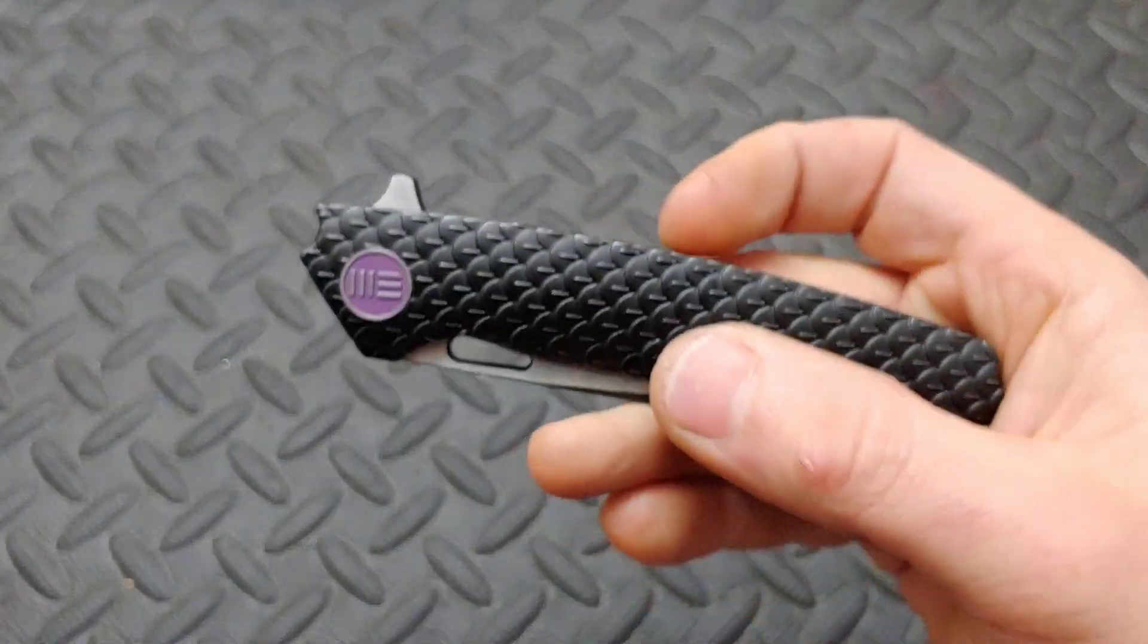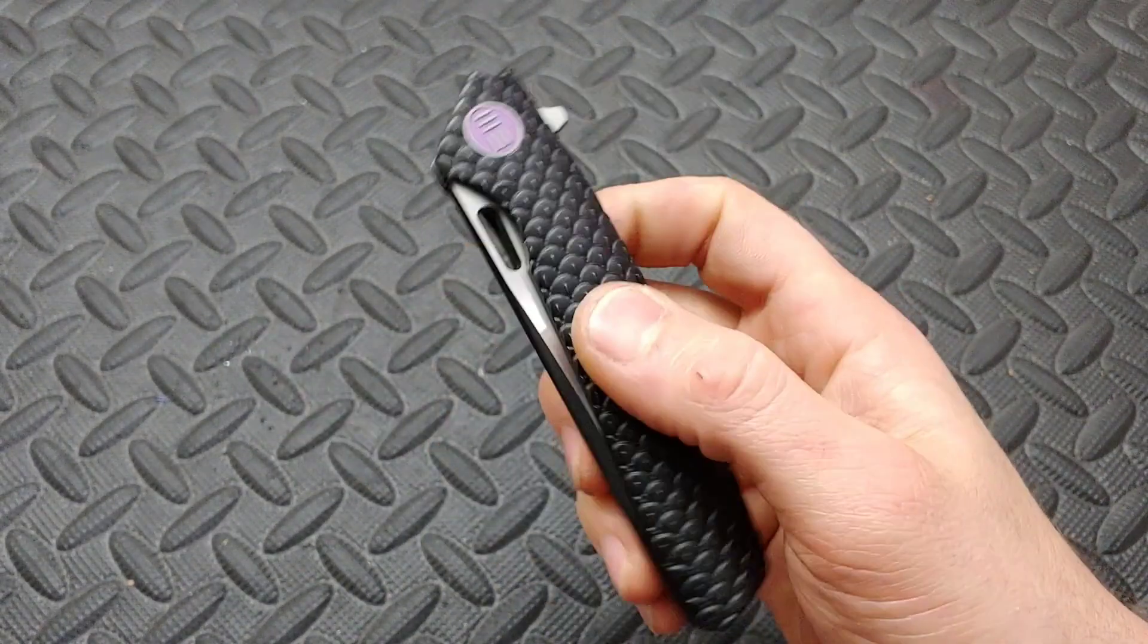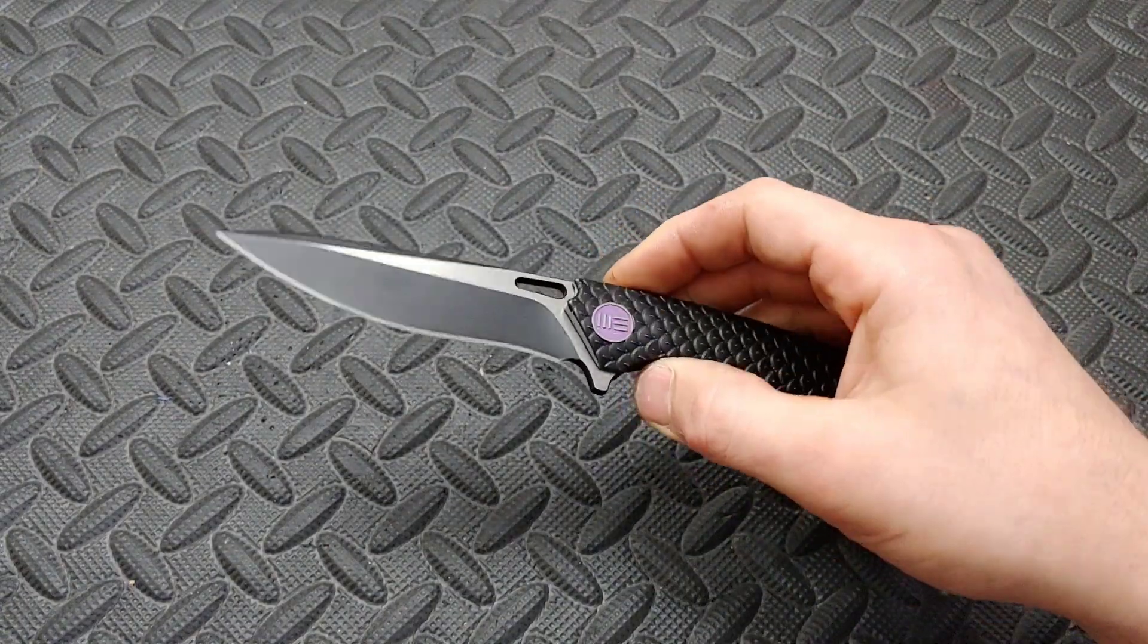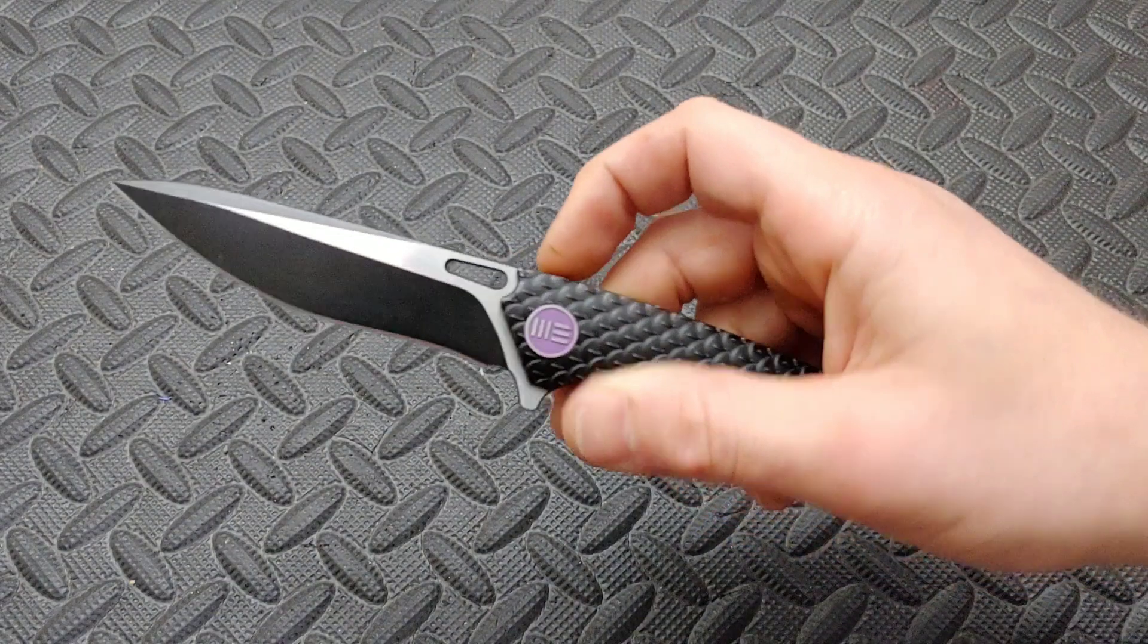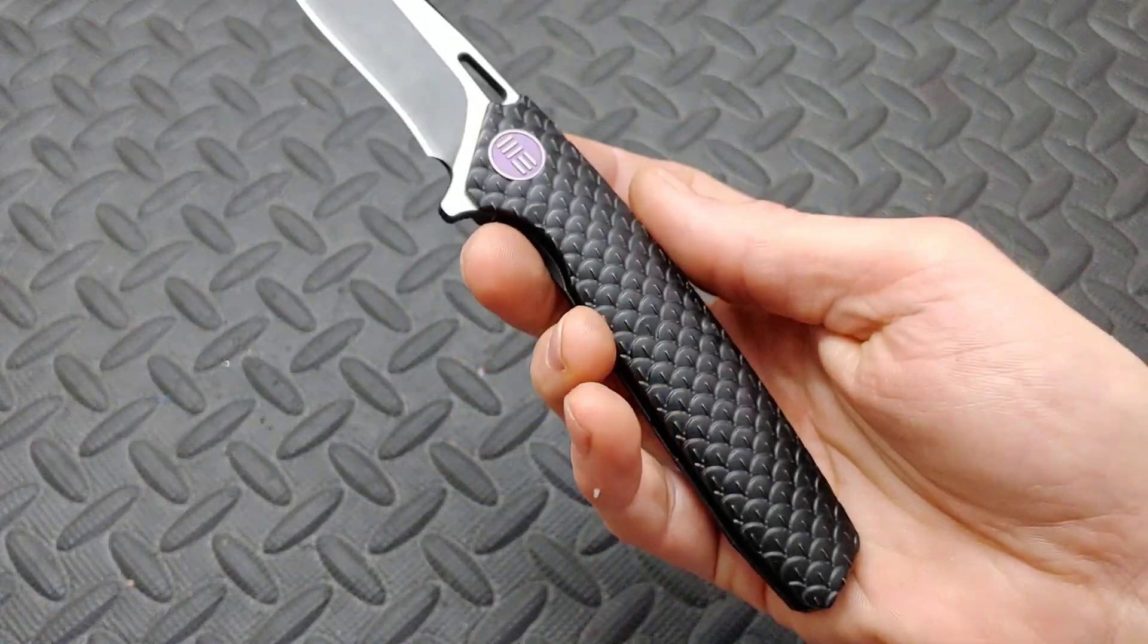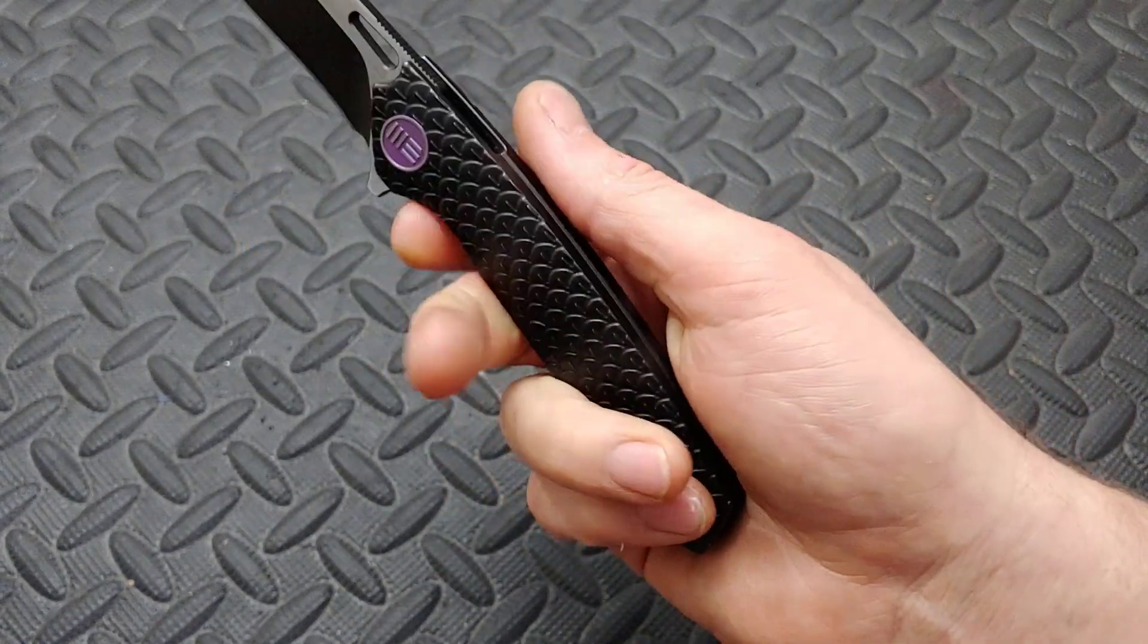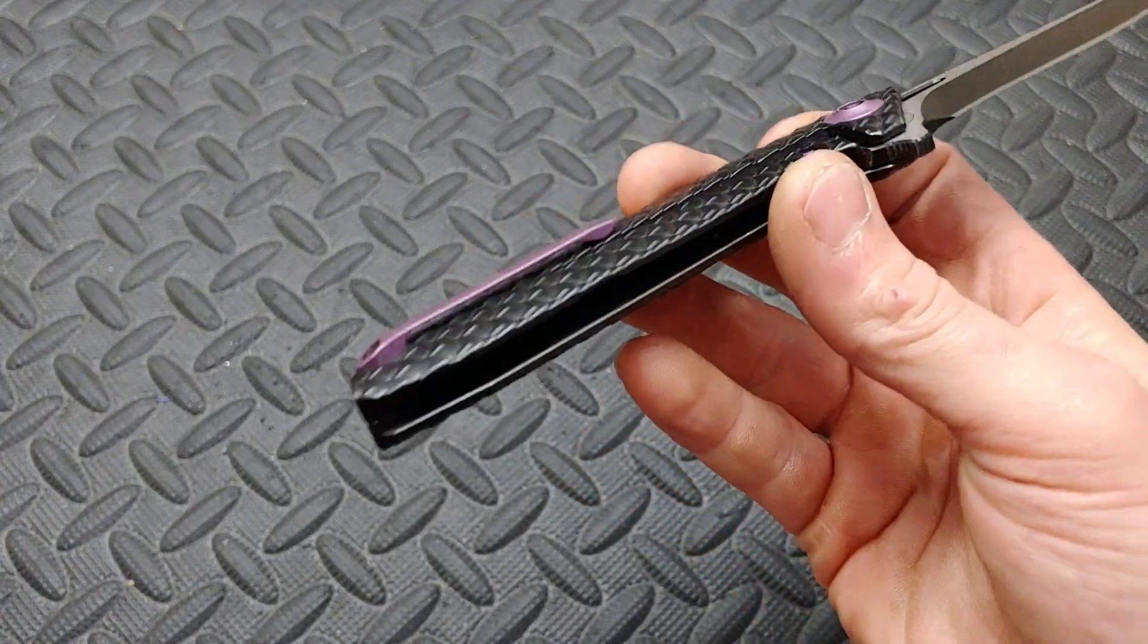Alright, so let's get into this We Knife 604L. The 604L is the one with this blade shape. This one does come in different blade shapes, this model. Very cool. S35VN. It has like a dragon scale titanium handle. It's not an integral, it is a sandwich, but it looks very integral-like. It is a frame lock, obviously.